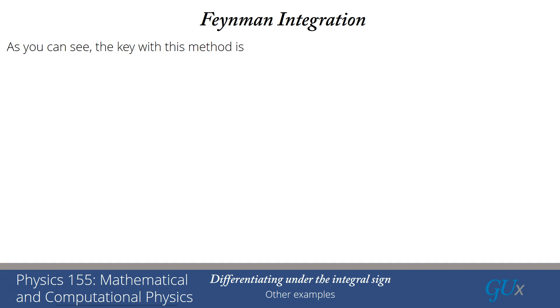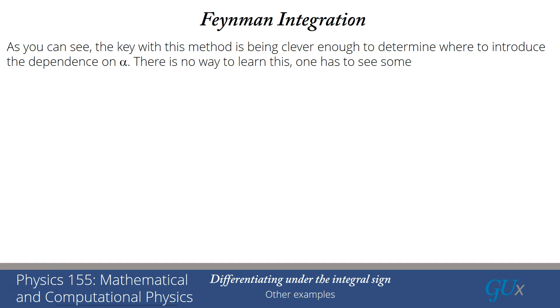As you can see, the key with this method is being clever enough to determine where to introduce the parameter alpha. There's no way to learn this, one has to see some examples and be creative with what you try.